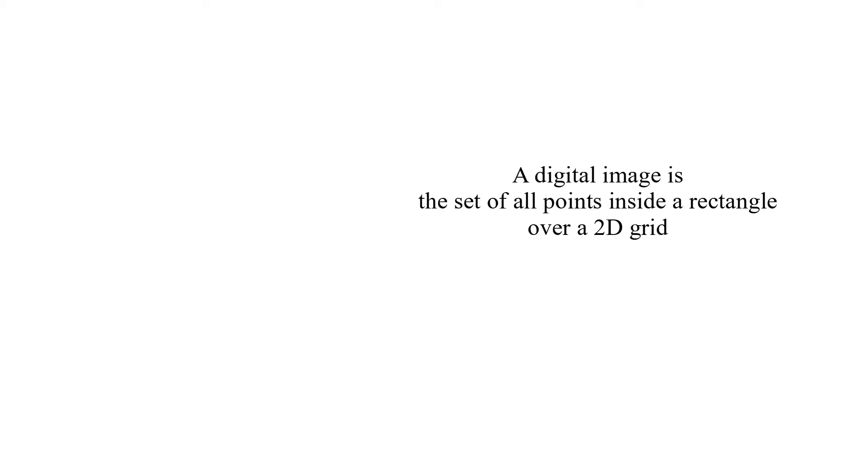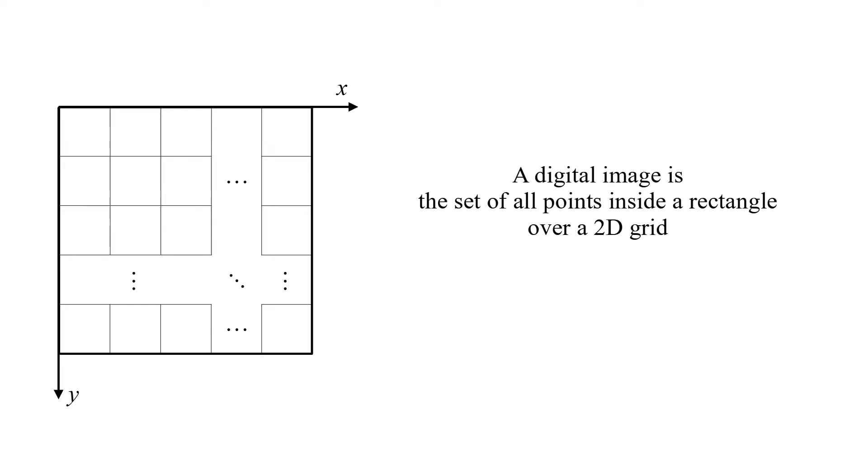A digital image is the set of all points inside a rectangle over a 2D grid. An image point is called pixel, meaning picture element.